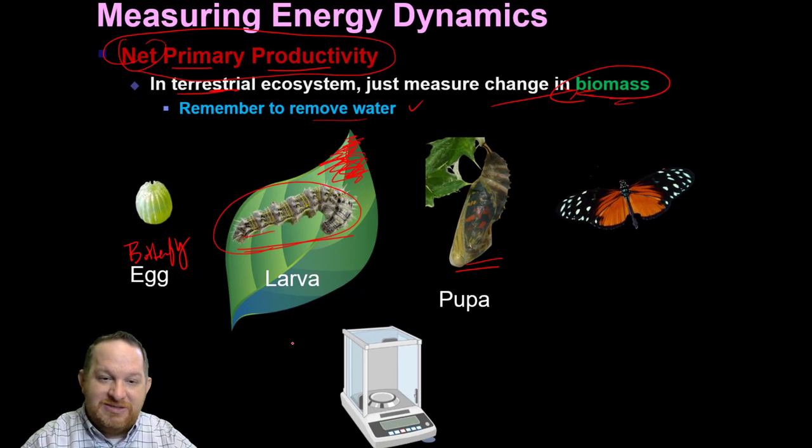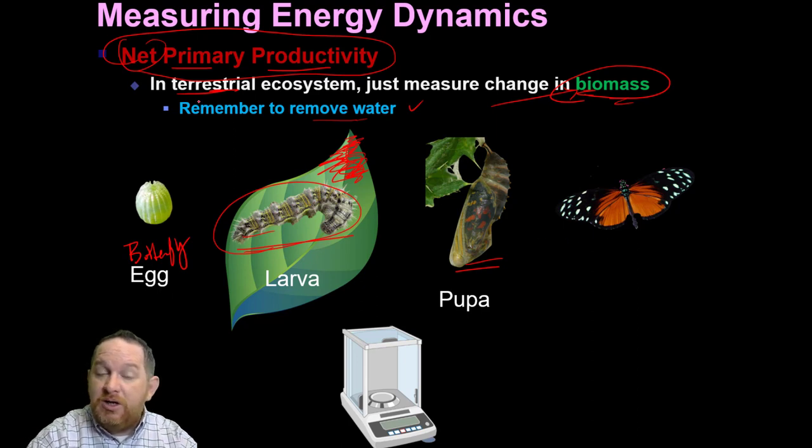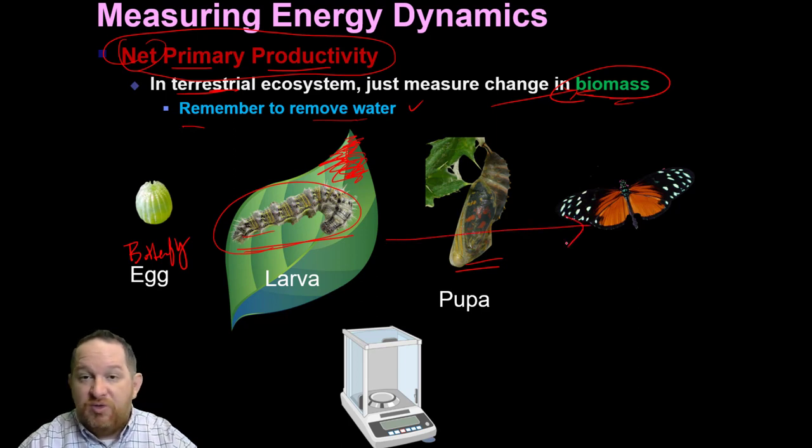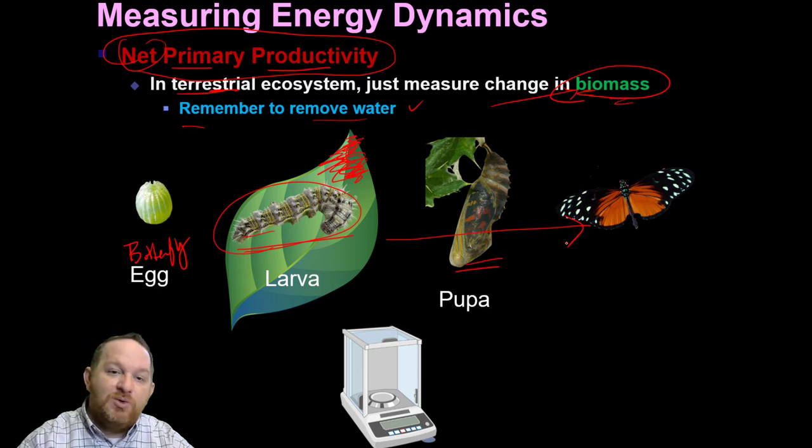Then it will go into its pupa stage. Over time, we could measure and see how much is now in the pupa. What's the mass? Remember, you got to account for and remove any water and see how efficient was the removal of that particular energy from this level. We could literally measure in a lab the transfer of energy by taking what they ate and seeing how much they grow and measure the primary productivity.